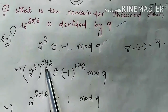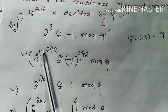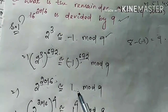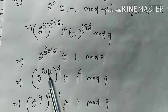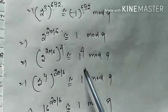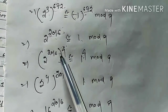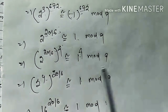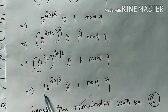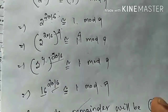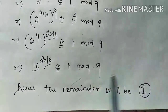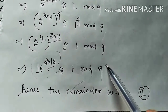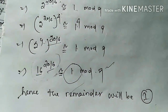By raising the power by 672 on both sides, we get 2 to the power 2016 is congruent to (minus 1) to the power 672, which equals 1 mod 9, since an even power of minus 1 is plus 1. Now by raising the power by 4 on both sides, and using the fact that 2 to the power 4 is 16, we get 16 to the power 2016 is congruent to 1 to the power 4, which is 1, mod 9. Hence, when 16 to the power 2016 is divided by 9, the remainder is 1.